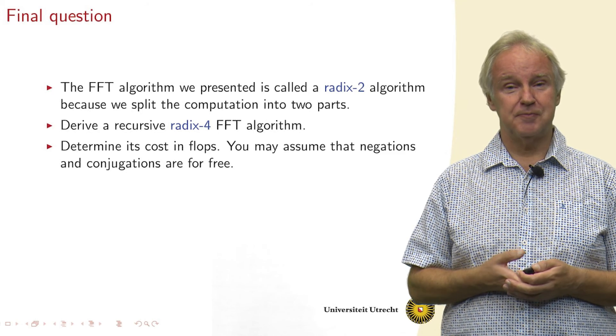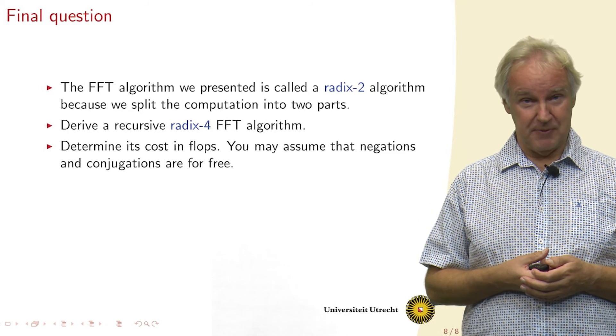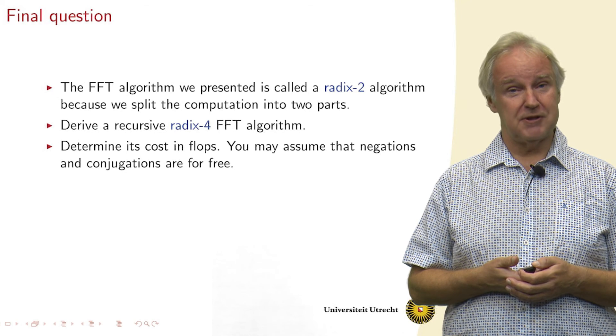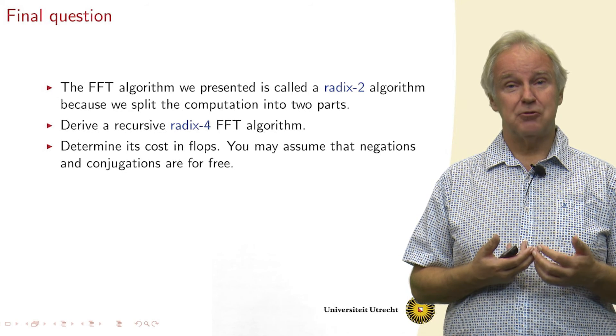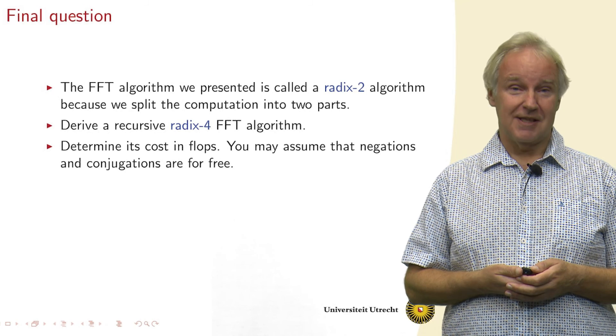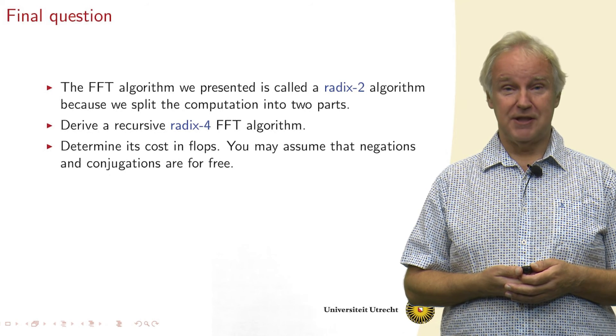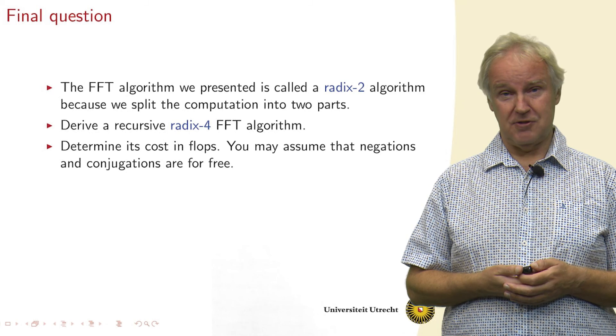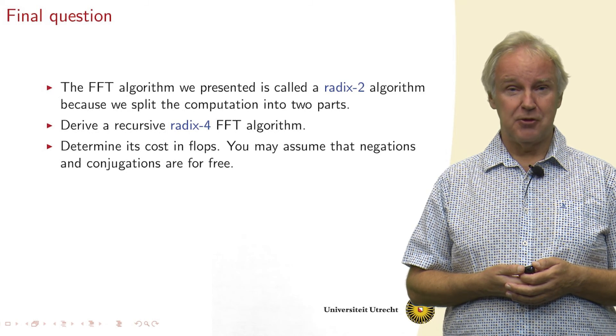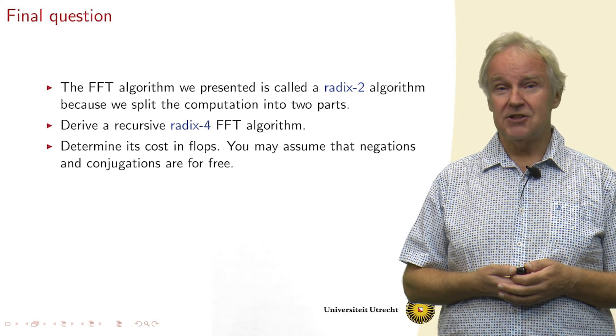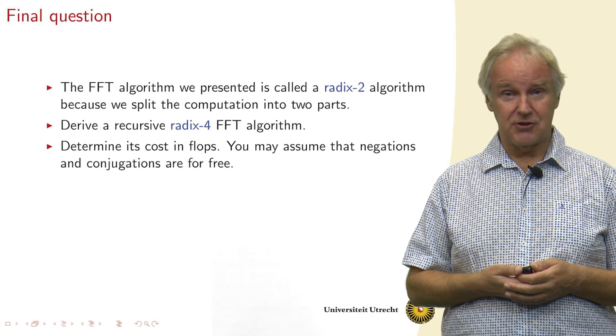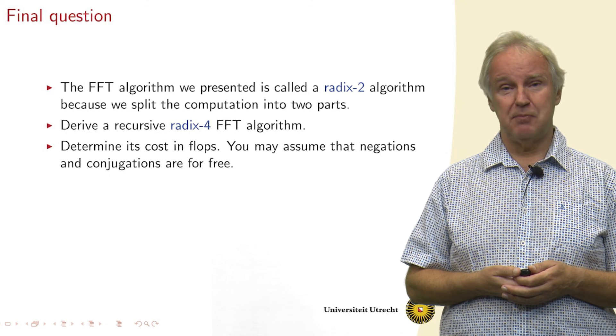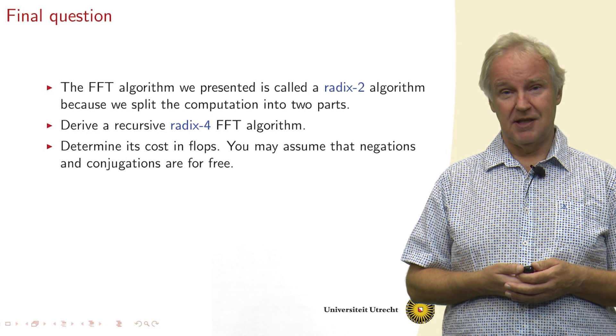Final question to you: the algorithm that we have derived here is a Radix-2 algorithm, because it splits the vector into two parts. Can you derive a Radix-4 algorithm? Determine its cost. And here you can assume that negations and complex conjugations are for free, because they basically flip only a bit in the stored data.